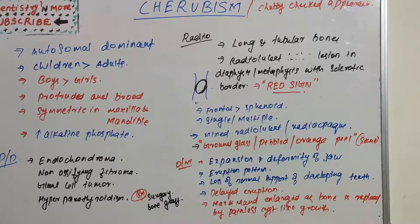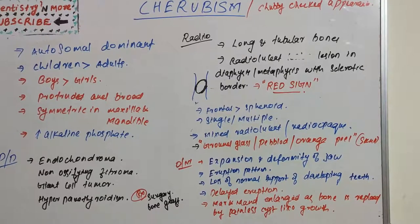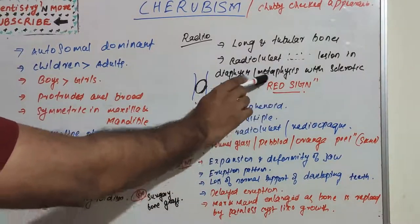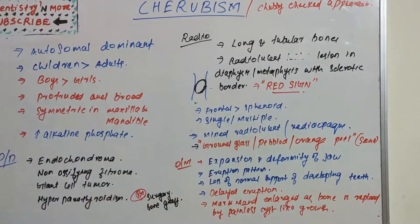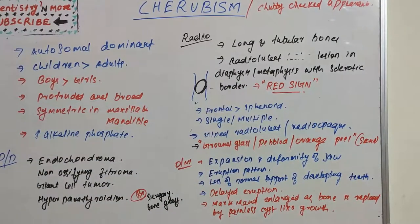In summary, Cherubism is an autosomal dominant condition commonly seen in children, especially boys. It is characterized by expansion of the maxilla and mandible by cyst-like growths within these bones, which replace the normal bone. The unique radiographic features are the red sign and ground glass, pebbled, or orange peel appearance. Thank you, and I will come back with a new topic in Dentistry and More.